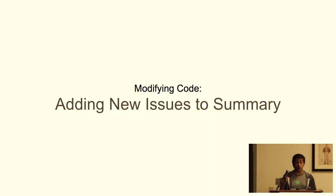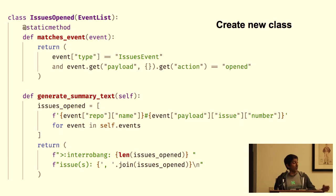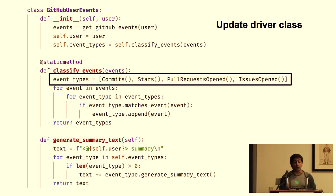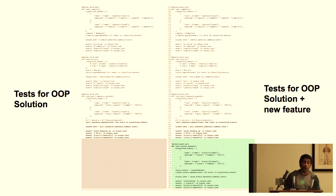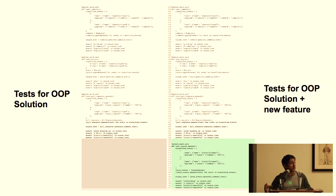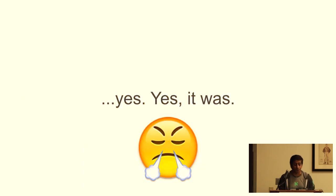Now let's add tracking for new issues using our OOP design. We create an IssuesOpened class — when the event type is issues event and the payload action is 'opened', we return true, otherwise false, plus code to generate summary text. Then we update our driver class to track this new IssuesOpened class. Looking at the test diff for our OOP solution versus OOP solution with the new feature, we're only adding code at the bottom — only testing that new functionality. In comparison to the previous design, we're not having to change tests we already wrote. That's a better design.